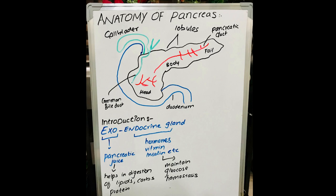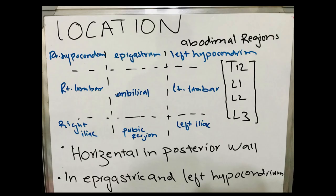The pancreas is divided into four parts: the head, neck, body, and tail. Regarding location, the pancreas is present in our abdominal region, specifically in the horizontal posterior wall. It is found in the epigastric and left hypochondrium regions.